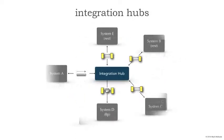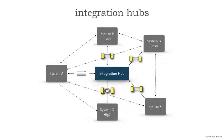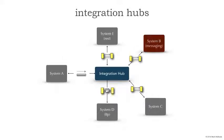What I want to do is convert this to a different topology using an integration hub or an ESB. Notice now everything is still communicating the same way it was before, but all those routes are going through the integration hub. Now let's take a look at system B converting back to messaging — REST wasn't the greatest idea. The question is what impact is there on every other system? And the answer is none, because I changed to talk to the integration hub through messaging, but that is decoupled so no other system has to be aware that system B is now using messaging.